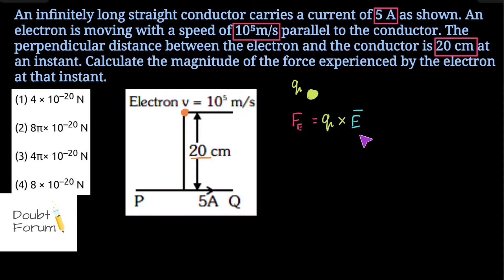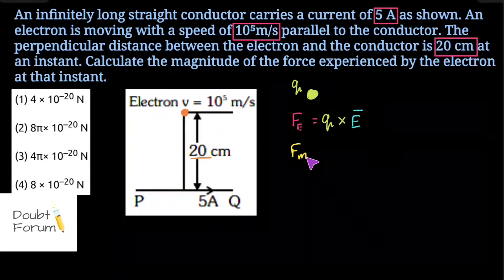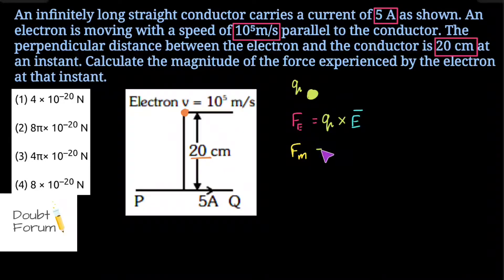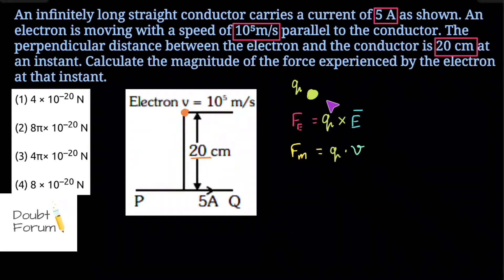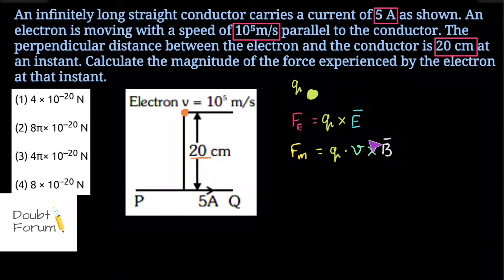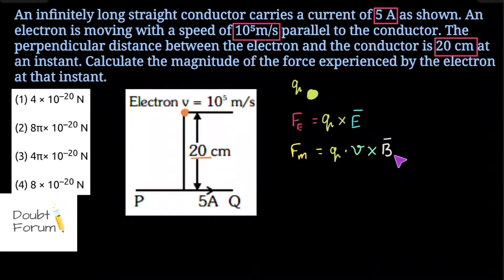Similarly, if we talk about the magnetic field, the total force experienced by a charged particle Q due to the presence of a magnetic field, denoted Fm, is equal to the magnitude of charge into V — the speed at which the electron or charged particle is moving — cross the value of magnetic field B. The direction of this force due to the magnetic field is determined by the right-hand rule.